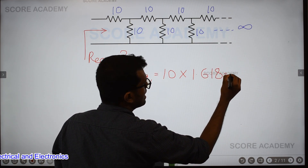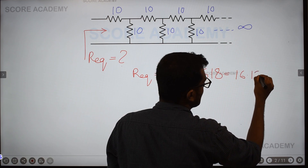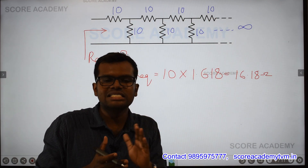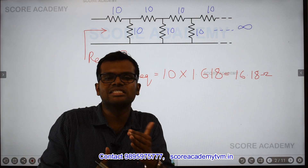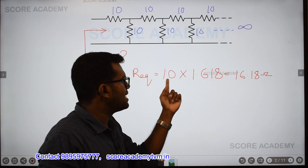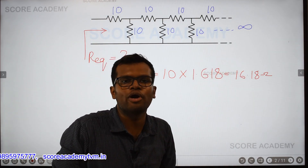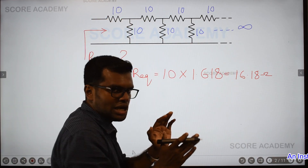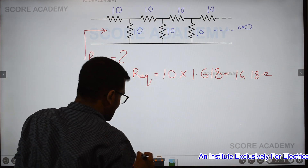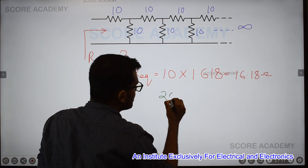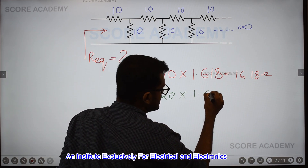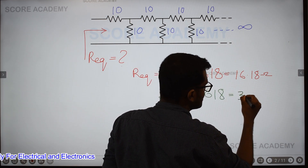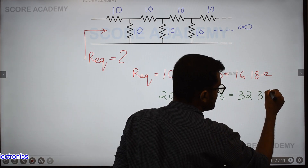The answer is 16.18 ohms. This question gives R equivalent. For an infinite resistance network where R equals 10 ohms, the step is 10 multiplied by 1.618, which equals 16.18 ohms. If all resistances are 20 ohms, the answer would be 20 multiplied by 1.618, which equals 32.36 ohms.